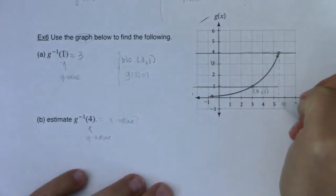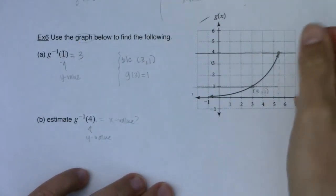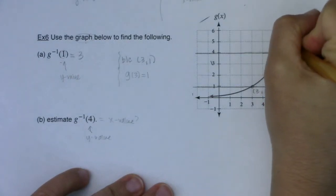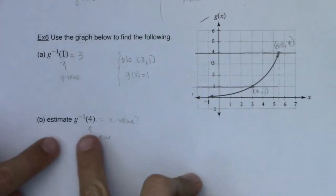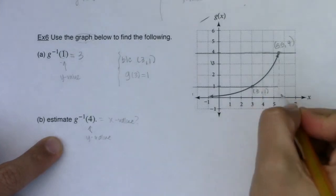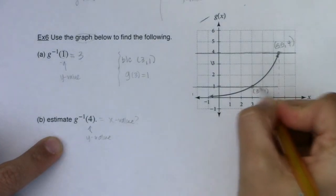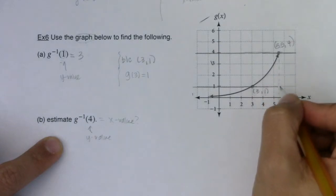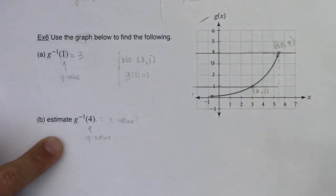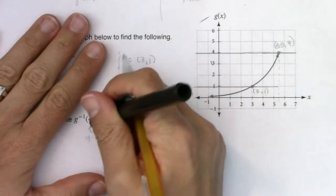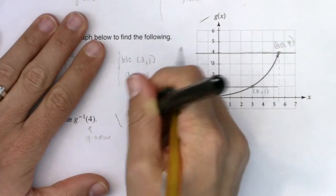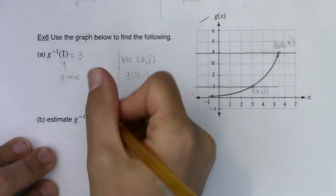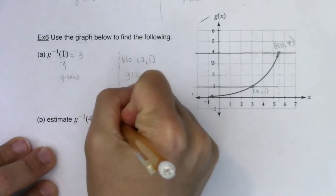That looks to be about five and a half. So I think this ordered pair is about 5.5 comma 4. The reason I say estimate is because it's not hitting right on a grid point. This one's a little fishy—we're not exactly sure. So I'm going to estimate g inverse of 4 by saying I believe it is approximately 5.5.